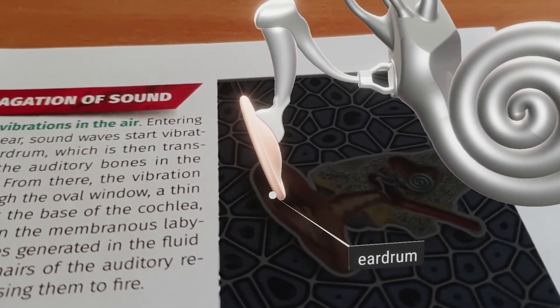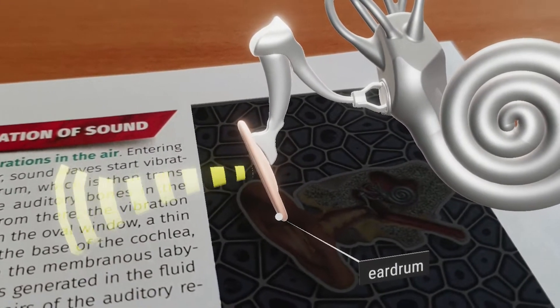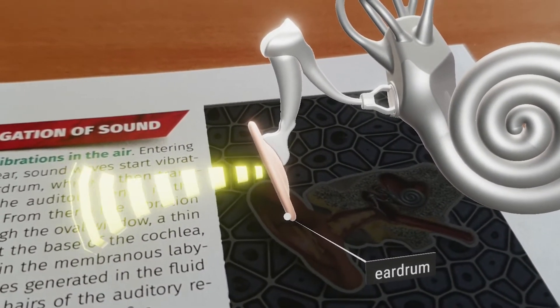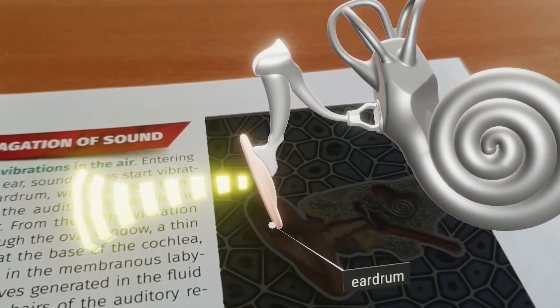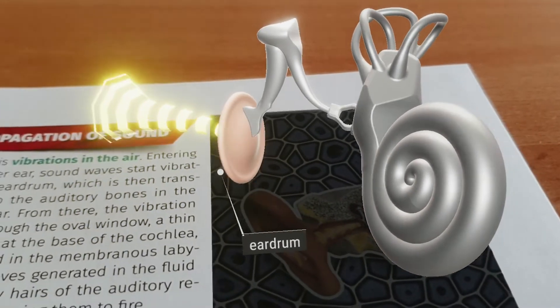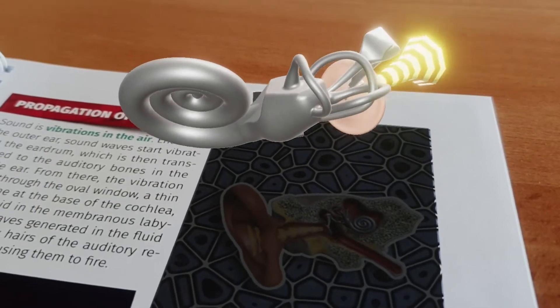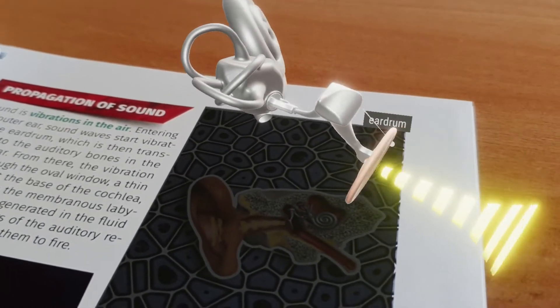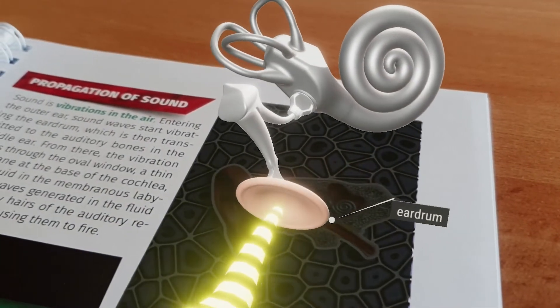The eardrum begins to resonate under the influence of sound waves and transmits the vibration to the three auditory ossicles in the bony cavity of the middle ear. These little bones receive and transmit the vibrations in sequence towards the inner ear.